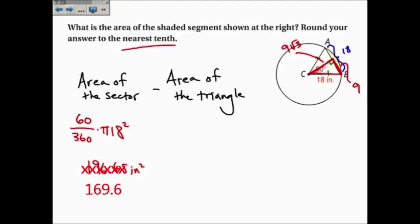So in the triangle, the area is one-half the base, which is 18, times the height, which is 9 root 3. So one-half times 18 times 9 root 3 is 140.30. So if I subtract these, 169.65 minus 140.3, I get 29.35 inches squared, and that's the area of this piece in here.